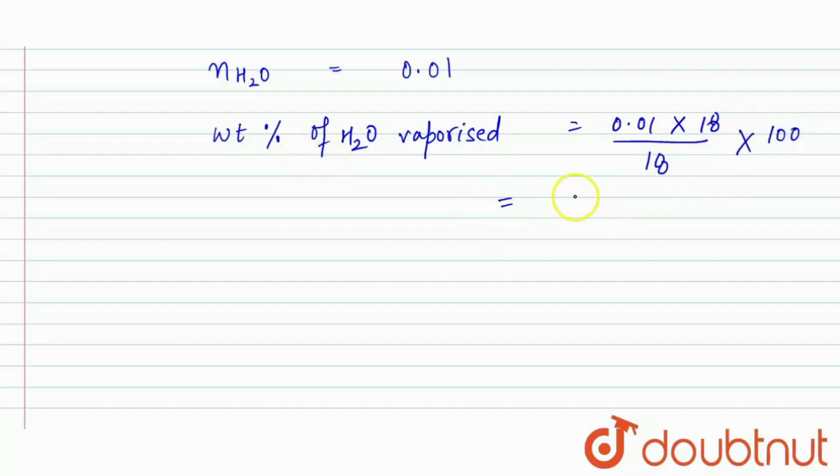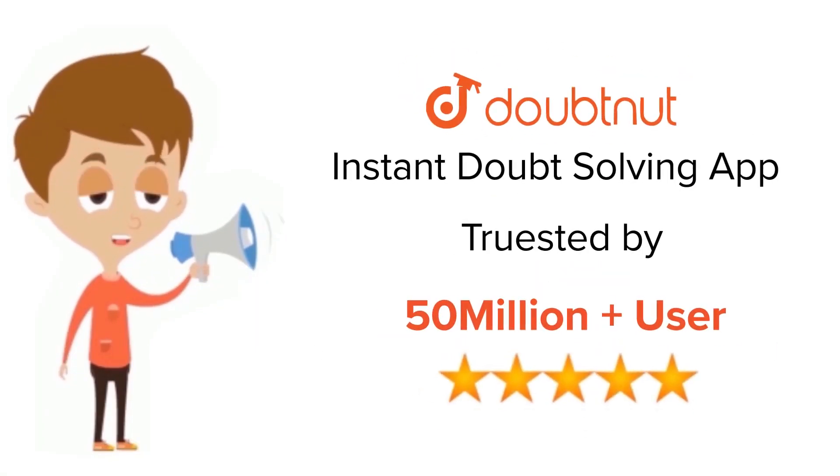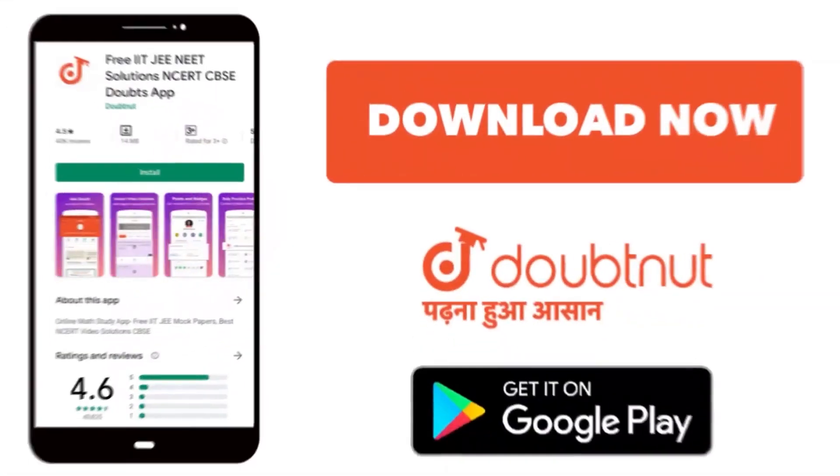So it will be equal to one percent. Right, so our answer is one percent and it matches with this option, so it is our correct option. Thank you for class 6 to 12, IIT JEE and NEET level, trusted by more than five crore students. Download Doubtnut app today.